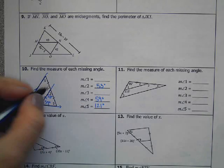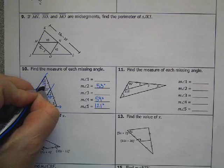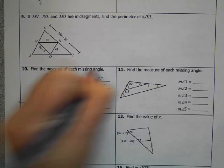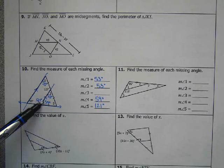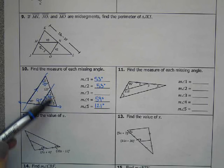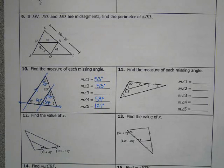And then for angle 3, you have an entire triangle here, and a triangle adds up to 180 degrees. So if you do 180 minus the sum of 59 plus 53, you get 68 degrees for angle 3.